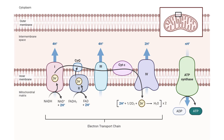Good afternoon everyone, this is Sir Franz and this will be our short lecture on the respiratory chain or the electron transport chain. All of the reducing equivalents that are produced by the different catabolic pathways in the body involving reduced NAD and reduced FAD enter the electron transport chain. Eventually, the energy that they carry will be funneled into adenosine triphosphate.